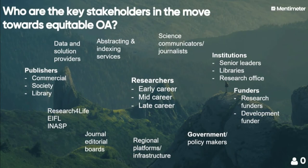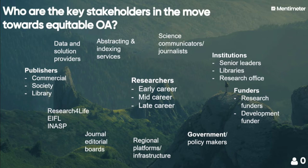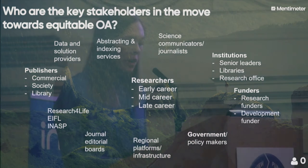Our next step was to think about key stakeholders in the move towards equitable OA. We identified a whole range of different partners within the publishing, research, and institutional landscape. Looking at the researcher-to-reader circle, it was pretty well reflective of all the different stages of the publishing and research process. That helped us understand there are many areas where we and others could be helping as different stakeholders to influence the move to OA.